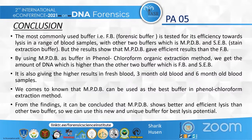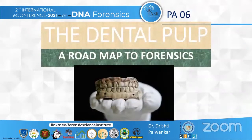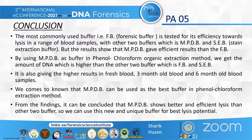In conclusion, the most commonly used buffer — the forensic buffer — was tested for its efficiency towards lysis across a range of blood samples, including fresh, three-month-old, and six-month-old samples, to check the lysis potential compared to two other buffers: MPDB and SEB. The results showed that MPDB gives more efficient results than the forensic buffer. By using MPDB in the phenol-chloroform organic extraction method, we obtained a higher amount of DNA than with the forensic buffer and SEB buffer. It can be concluded that MPDB shows better lysis potential and efficiency compared to the two other buffers, and can be recommended for use in further studies.